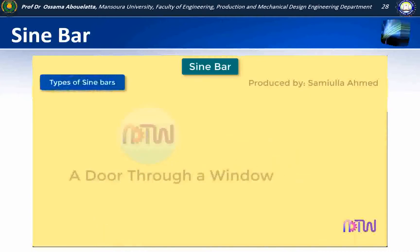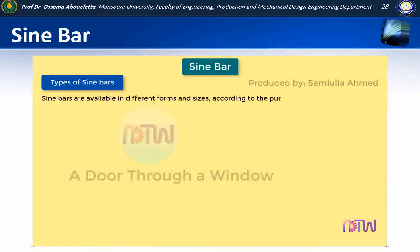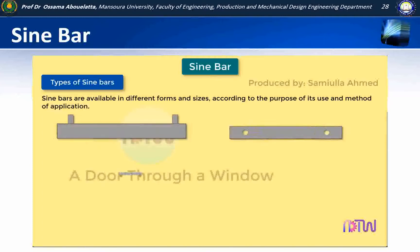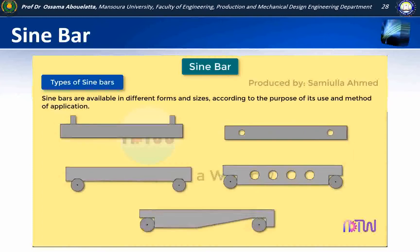Types of available sine bars: Sine bars are available in different forms and sizes according to the purpose of use and method of application. These are the different types of sine bars.